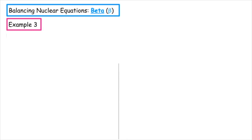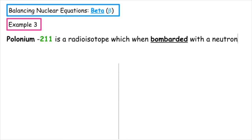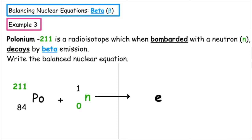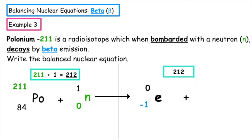Example three: we have polonium-211, which is a radioisotope which, when bombarded with a neutron, decays by beta emission. Write the balanced nuclear equation. Polonium has chemical symbol Po, atomic number 84, and mass number 211. It is bombarded with a neutron, which has a charge of zero and a mass of one. It releases a beta particle — an electron — with a charge of minus one and a mass of zero. The total mass on the left-hand side is 211 plus one, giving a total of 212, so the right-hand side also has to total 212. Zero plus what gives 212, so the product particle has a mass number of 212.